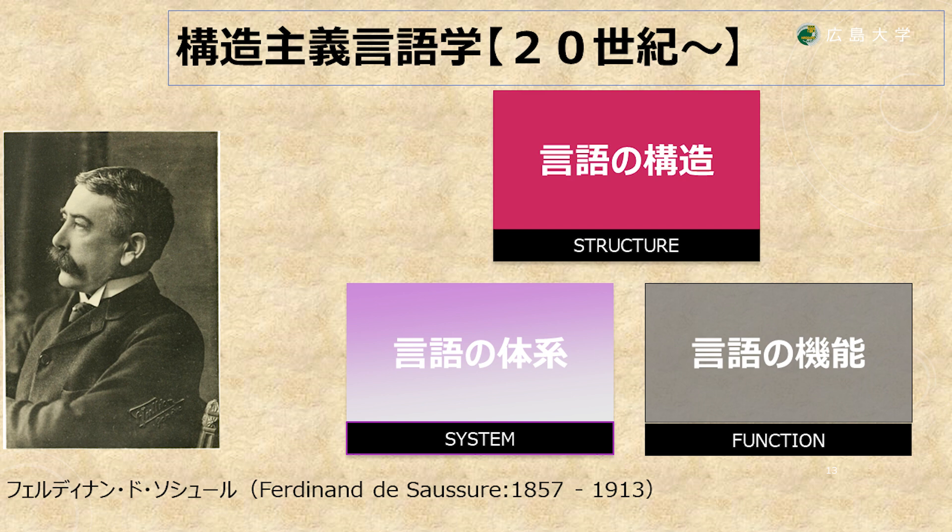言語学の研究史には歴史言語学に続く形で構造主義言語学というものが始まります。構造主義言語学は言語がバラバラな成分の寄せ集めではなく、一定の構造・体系を持つものであるという想定のもとにその構造と機能を研究しようとする言語学です。この構造主義言語学は20世紀初頭に近代言語学の父と言われているスイスのフェルディナン・ド・ソシュールから始まります。